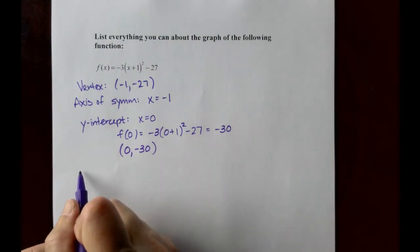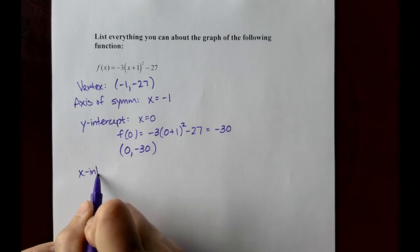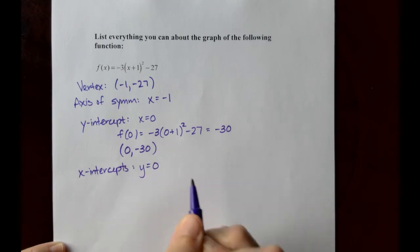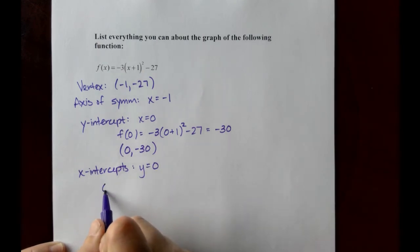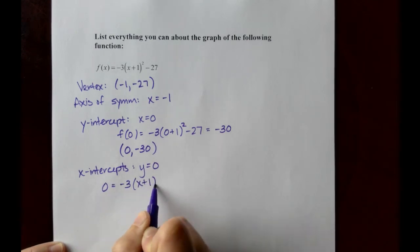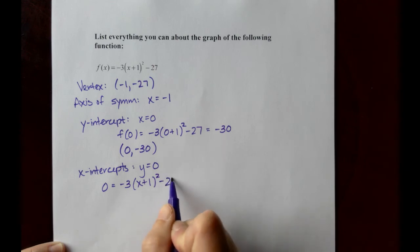Our x-intercepts, when you want to find those you'll set the y-coordinate equal to 0. In this case we'll have 0 equals negative 3 times the quantity x plus 1 quantity squared minus 27.